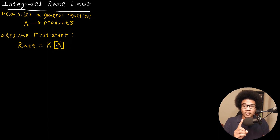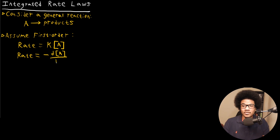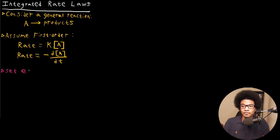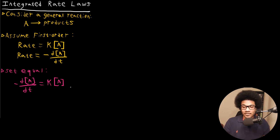We also know that we can write out the reaction rate as negative d[A]/dt. These are equivalent statements of the rate of the reaction, so we can set these two equal to each other. Setting them equal gives us: -d[A]/dt = k[A]. This sets up a differential equation where we have related this differential to the concentration.